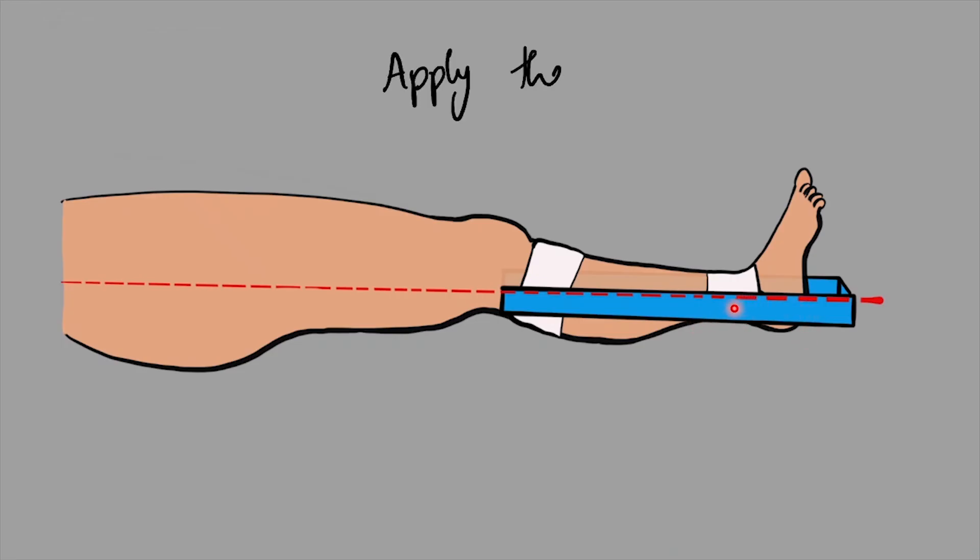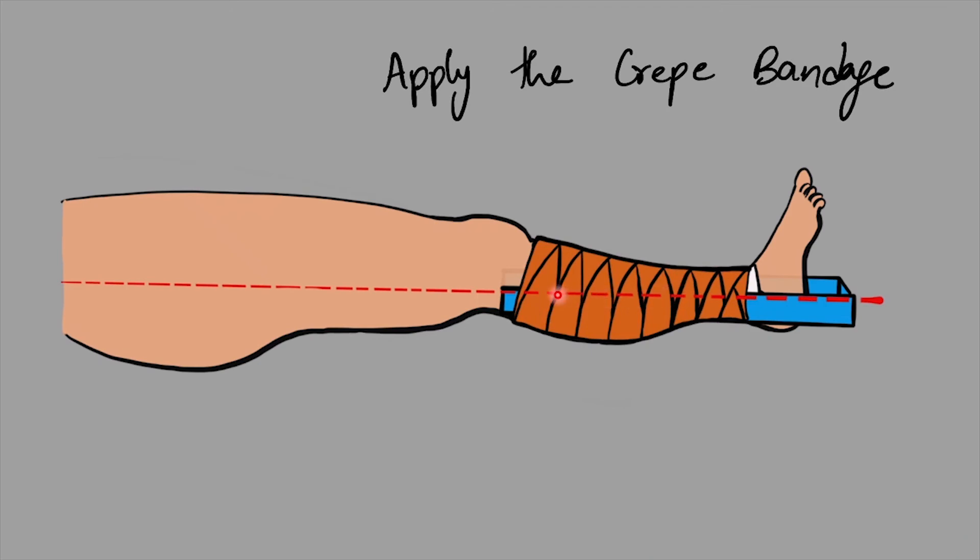Now apply a crepe bandage starting from the ankle joint upwards, which should be firmly applied, but the bandage should not be so tight that it causes skin or vascular complications.